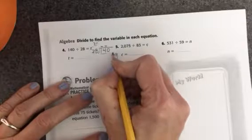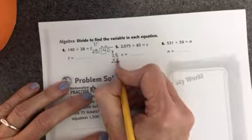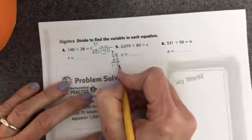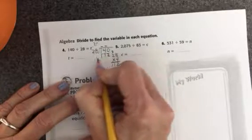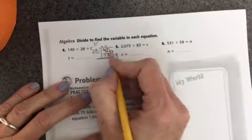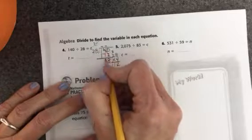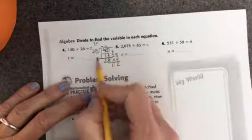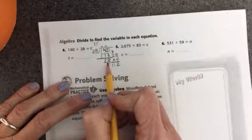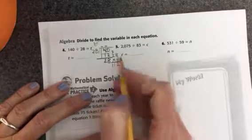So I'll try 28 times 4. 8 times 4 is 32. 2 times 4 is 8, plus 3 is 11. I have 112. So I'll write 112 and subtract. 10 minus 2 is 8, and 3 minus 1 is 2.